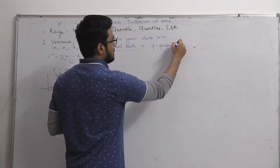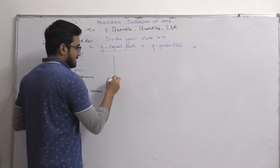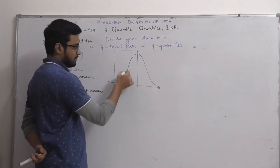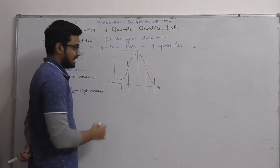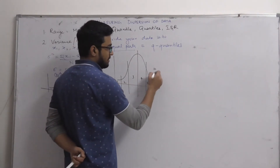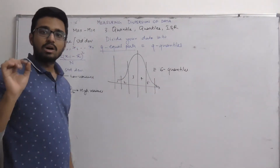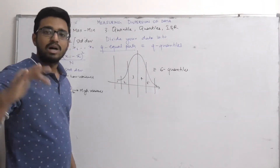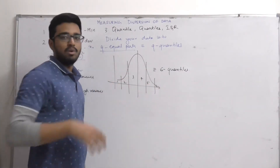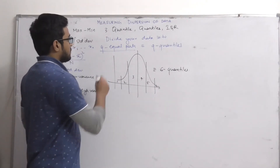Suppose we have a distribution of data and we divide it — first into two parts, then further until we have six equal parts. So we have divided the data into six equal parts, which is equivalent to six quantiles of the data. A quantile represents the 1/q-th part of the data. So if there are q quantiles, then one quantile represents 1/q-th part of the data.